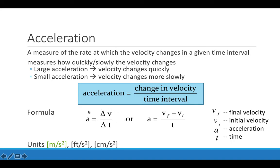The formula that we use for acceleration is that the acceleration is the change in velocity, delta V, over the time interval delta T. Acceleration is a vector quantity, just like velocity is a vector quantity, so it has both size and direction associated with it. We can write the acceleration more explicitly as the final velocity minus the initial velocity over some time T, where T is the time interval where the velocity changes.